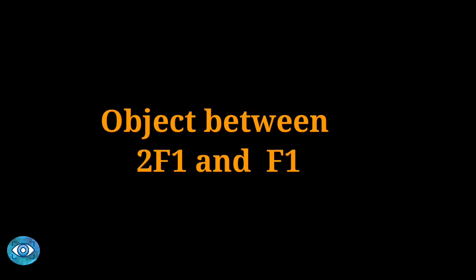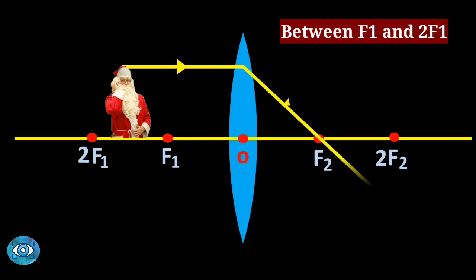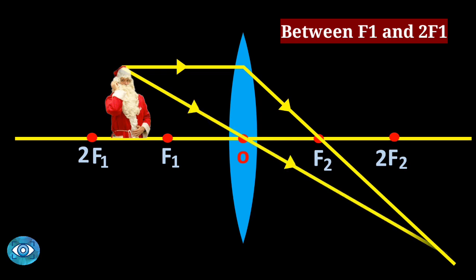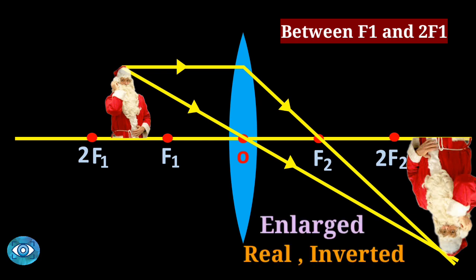Case four: the object is between 2f1 and f1. The light ray rules applied are the same as in the previous cases. The image is formed beyond 2f2, and an enlarged image is formed here.